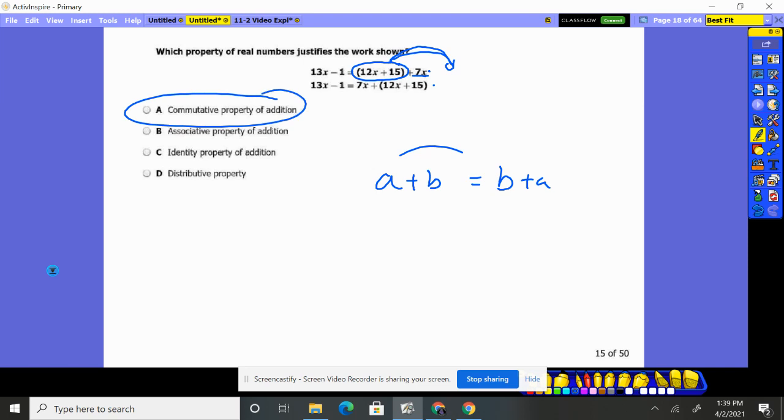It's going to be choice A. The commutative property is where it moved. They want you to think associative. Associative is where we have these grouped, and we change it. The grouping, nobody moves.